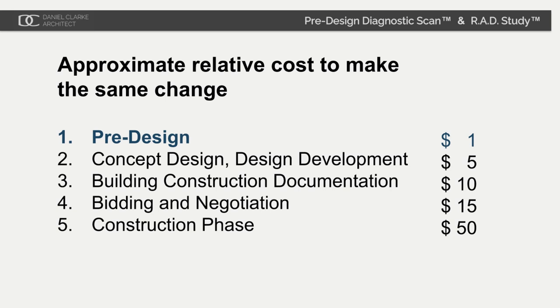During concept design, maybe five dollars. Construction technical documentation, ten dollars. Bidding and negotiation, fifteen dollars. By the time you're in construction, it'll cost you fifty dollars — fifty times as much to make the same change.